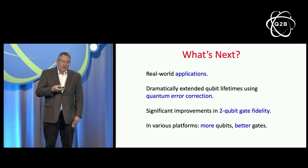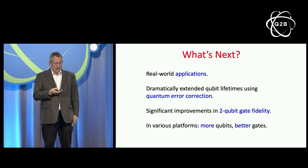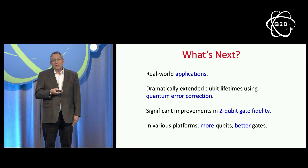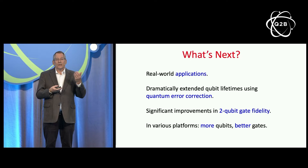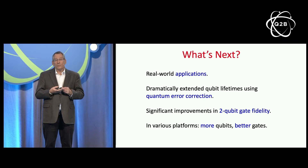Now that the hardware is working, we can start seriously seeking real applications. What we'd all very much like to see are real applications with a practical impact on the world, because that will stimulate further interest and investment, which will be necessary for the technology to continue to advance. We can also expect dramatic improvements in storage times of logical qubits using quantum error correction, and hope for continuing advances in two-qubit gate fidelities, enabling us to execute larger circuits. In short, across various platforms, we'd like to see more qubits and better gates.